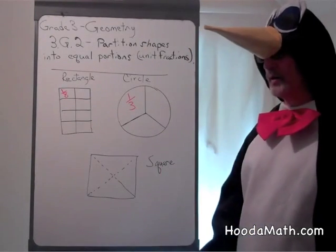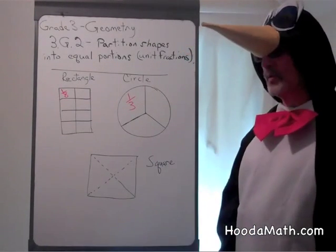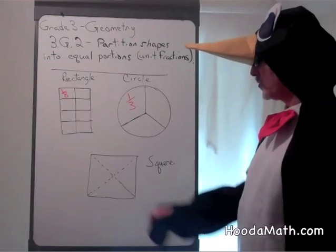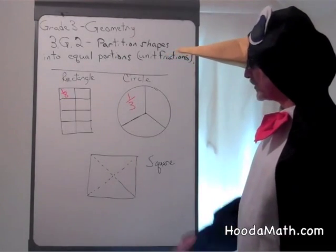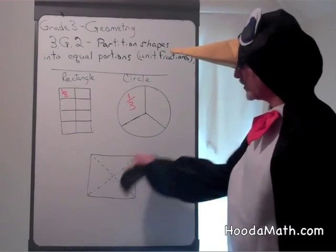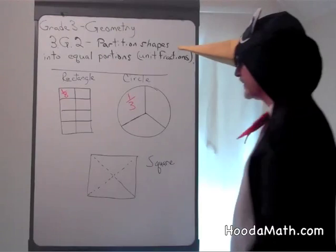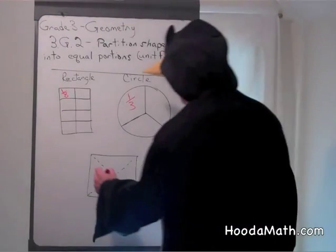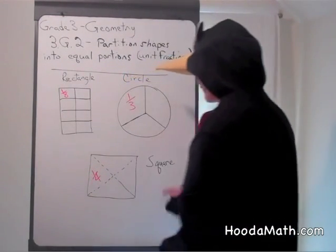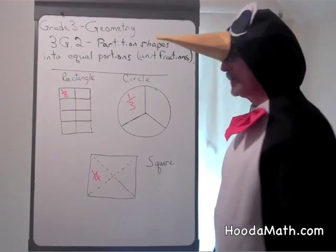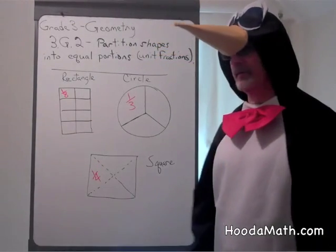And if we had a square and we split it this way, what would each of these triangular areas be called? You are correct — each one would be called one-fourth of the area of the square.